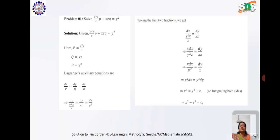Lagrange's Auxiliary Equations are dx/P = dy/Q = dz/R.